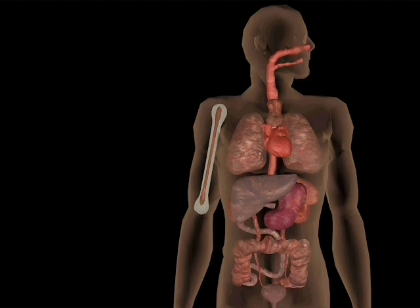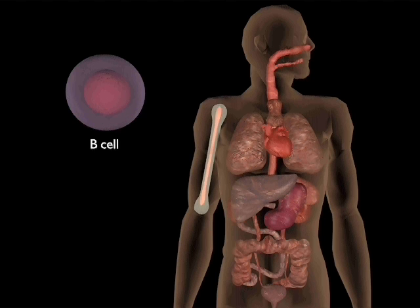Lymphocytes must generate diverse receptors in order to recognize the many different antigens which the individual might encounter during their lifetime. B-cells mature in the bone marrow and generate cell surface immunoglobulin as their receptor.